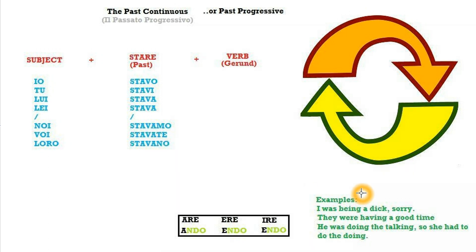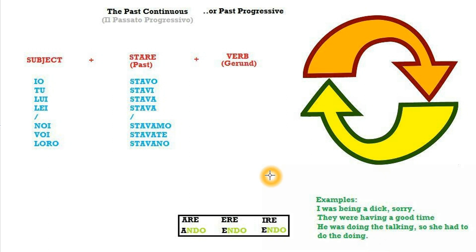Examples of the past continuous in English: I was being a dick. They were having a good time. He was doing the talking, so she had to do the doing. So basically, every time you have a subject, the verb to be in the past simple, and the gerund of the verb you want in the past continuous, you have your past continuous.